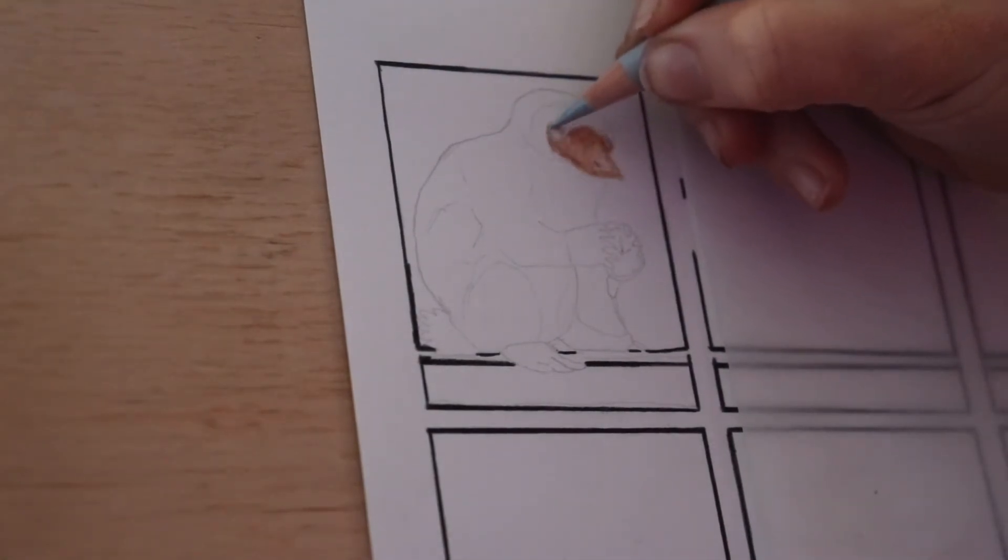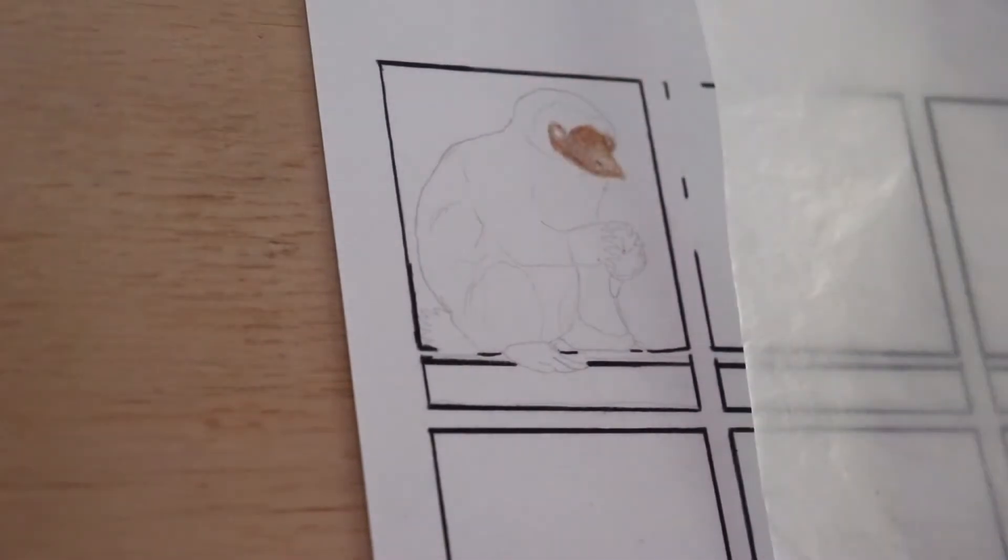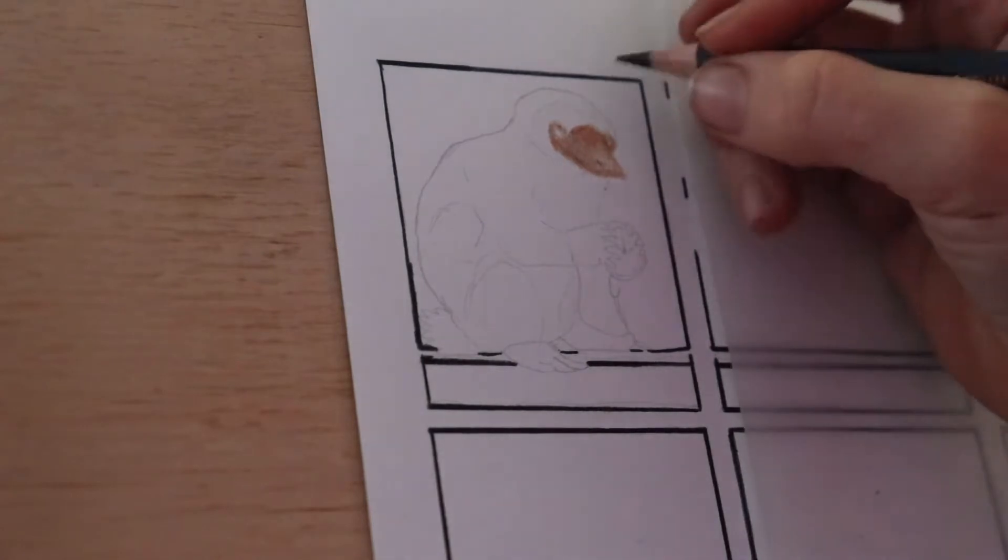Now I'm using a gray just to sort of tone the color down a little bit because it's getting a little bit fluorescent here. I'm also darkening it up a bit, being very careful not to put too much pressure over my light areas.